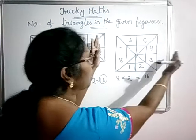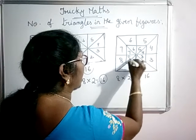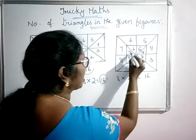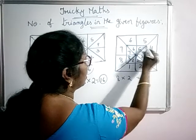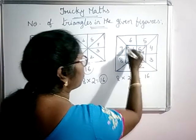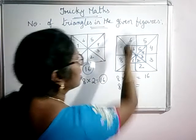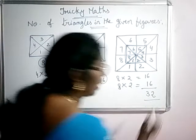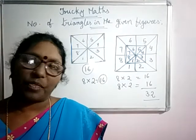Now take out the outside square and think that only the inner square is there. It has 1, 2, 3, 4, 5, 6, 7, 8 smaller triangles inside. After that you count the combinations: 9, 10, 11, 12, then the bigger ones: 13, 14, 15, 16. So total triangles in the inner square is 16 again. So the total number of triangles in this figure is 16 plus 16, which is 32 — calculated very easily and within very short time.